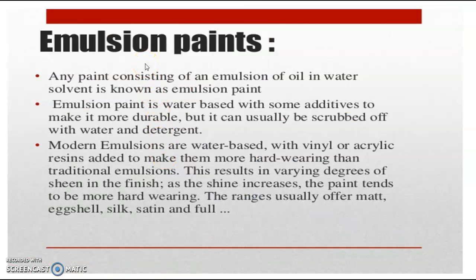Next, we will move to the types of paints. First, emulsion paints — any paint consisting of an emulsion (oil in water) with water as the solvent is known as emulsion paint. Emulsion paint is water-based with some additives to make it more durable, but it can usually be scrubbed off with water and detergents. Modern emulsions are water-based with vinyl or acrylic resins added to make them harder. This results in varying degrees of sheen or shine in the finish — as shine increases, the paint tends to be more hard-wearing. The range usually offers matte, eggshell, silk, satin, and full gloss finishing.